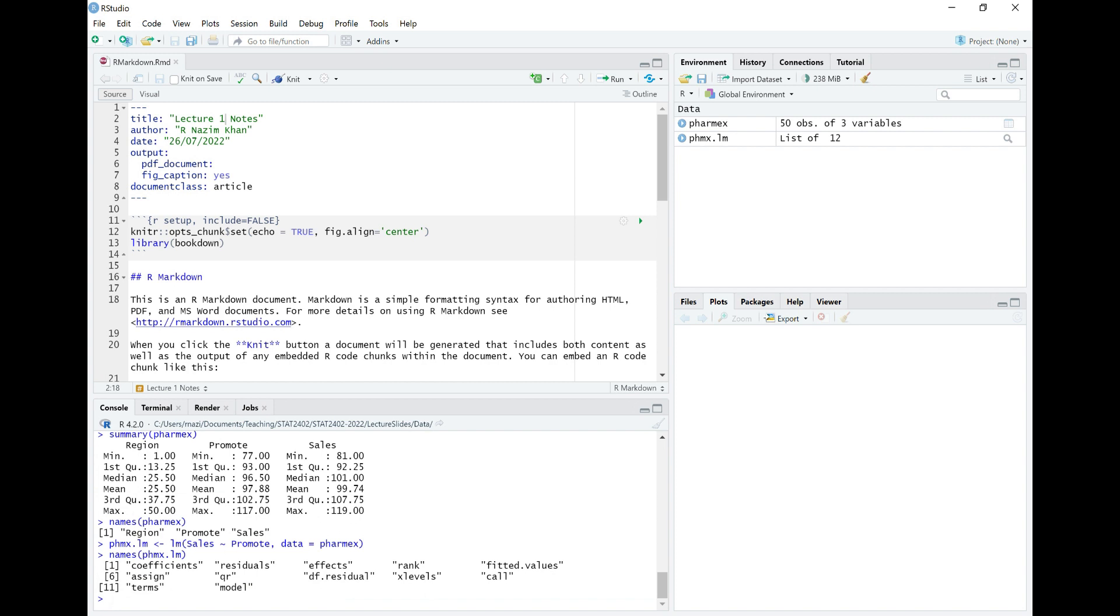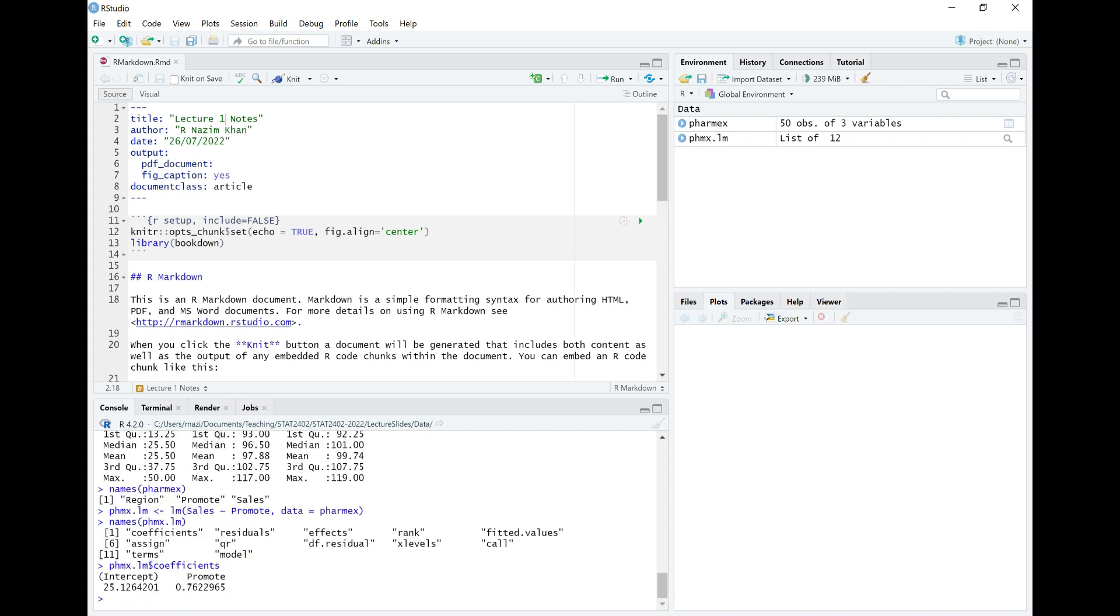So if I take a look at names of my Pharmex.lm, it will tell me what's stored there. I've got coefficients, receivables, effects, all these kinds of things. We'll access each of these as we go through here. For example, if I take a look at Pharmex.lm, $ will access a variable underneath that model, a particular object. So if I take a look at something like coefficients, it tells me of coefficients 25.12 and 0.76.